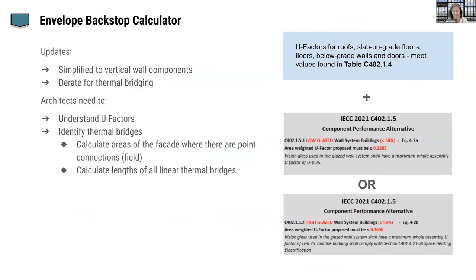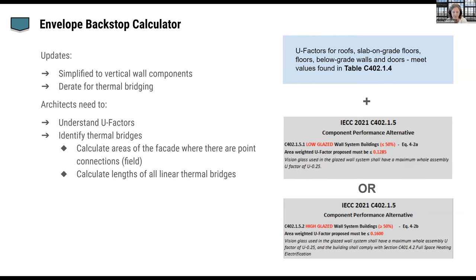Just as architects were responsible for the backstop calculator in previous editions, they're still responsible in the 10th edition. It's been simplified in that it only includes vertical wall components — you don't have to worry about adding the roof, slab, or below-grade walls. But what's more challenging now is that for all vertical wall components, you need to quantify the thermal bridges and show the math for de-rating them. While designers were generally using rules of thumb in the previous backstop calculator for U-factors that accounted for thermal bridging, now you have to show your math and really understand where those numbers are coming from — curtain wall manufacturer, modeling, etc.